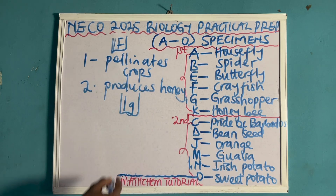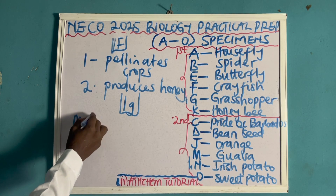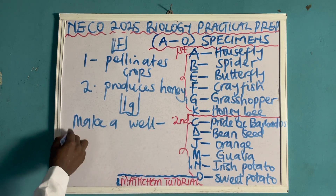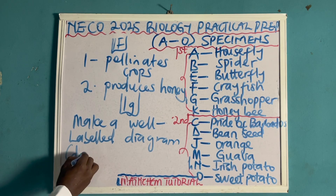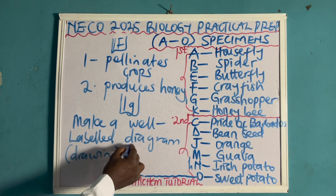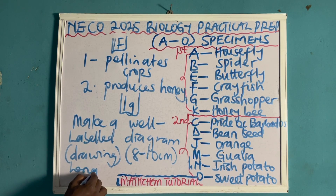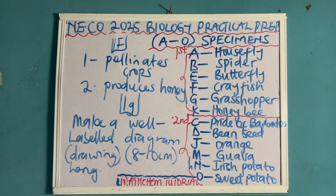Each category usually has a drawing question. They can ask you to make a well-labeled diagram or drawing, and they can give you a particular length, saying 8 to 10 cm long. They can ask you to draw the dorsal view of specimen A, that is the housefly. You should study the diagram of how to draw the dorsal view of the housefly, and also learn the drawings of all other specimens in this first category.